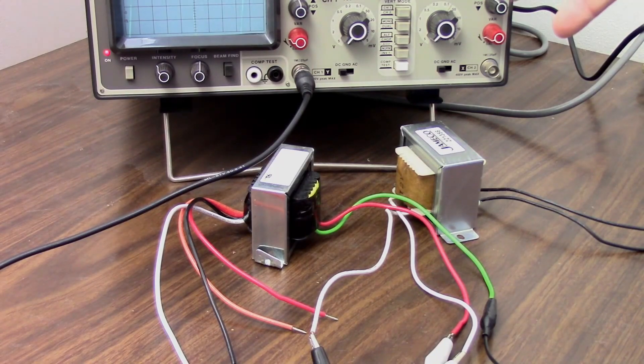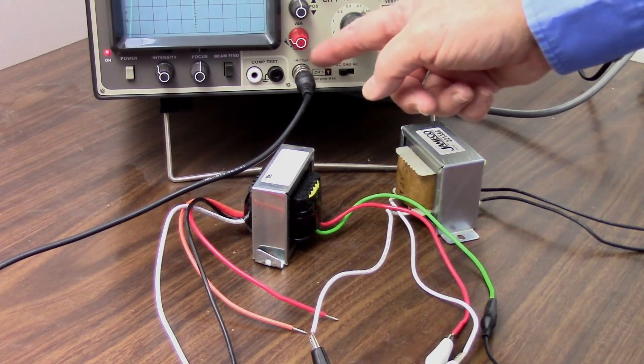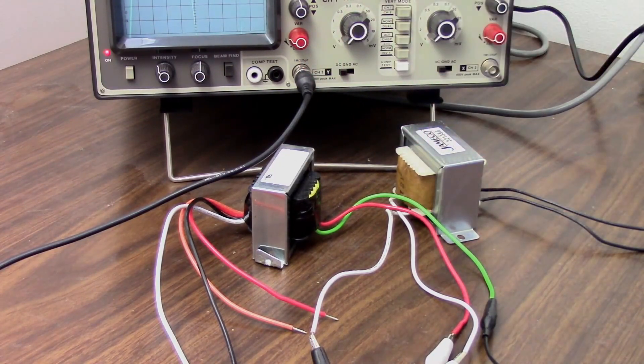You can measure the voltage of your mains with an oscilloscope, but you need to be careful. Remember, this is a true earth ground, and if you touch the ground of your oscilloscope to the hot wire of your mains, you're going to get sparks and smoke and all sorts of other undesirable things.